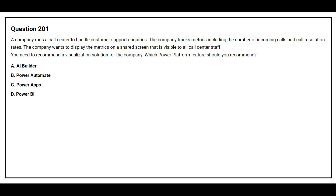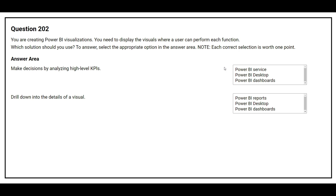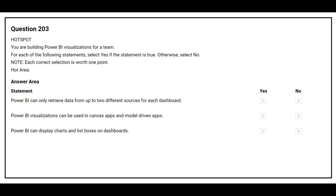The correct answer is option D: Power BI. Question number 202: You are creating Power BI visualizations. You need to display the visuals where a user can perform each function. Which solution should you use? The first question is: make decisions by analyzing high-level KPIs. The correct answer is Power BI Dashboard. The second question is: drill down into the details of a visual. The correct answer is Power BI Reports.